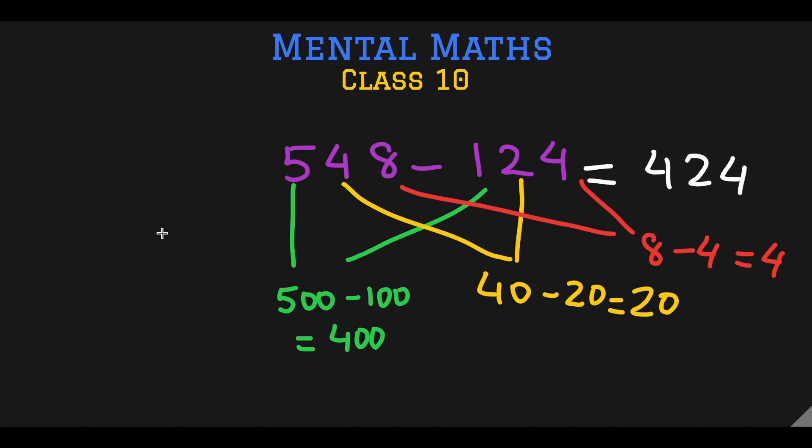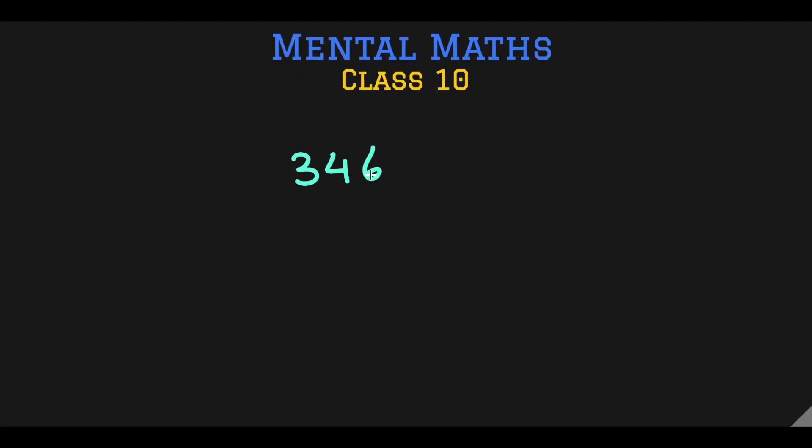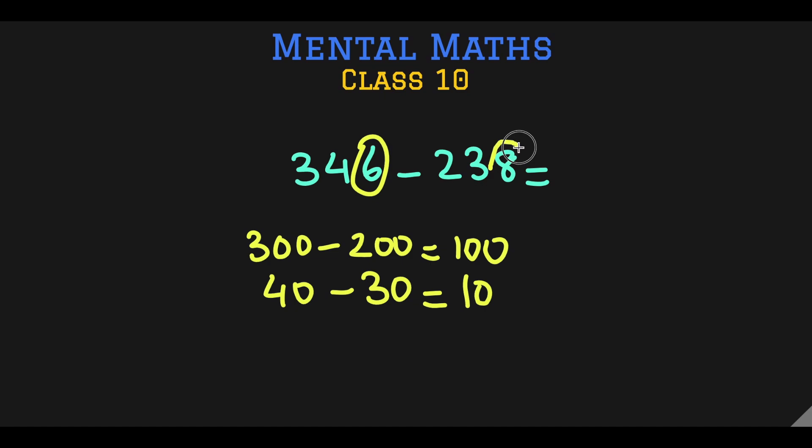Let's do another question and I will show you a slight problem that happens when we are doing subtraction, and it will show you why the second method might be more effective. 346 minus 238. Let's split the question into its hundreds, tens, and ones. 346 has three hundreds, 238 has two hundreds. So 100. Then 40 and 30 from here. So that gives you 10. And a 6 and an 8 from here.